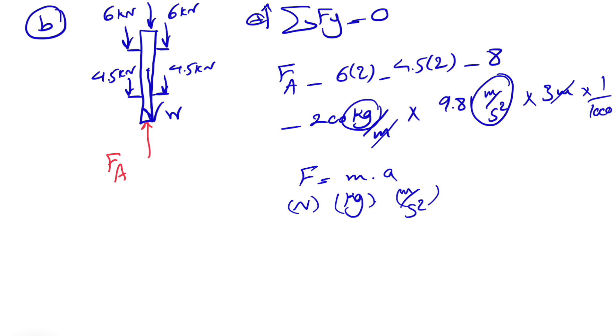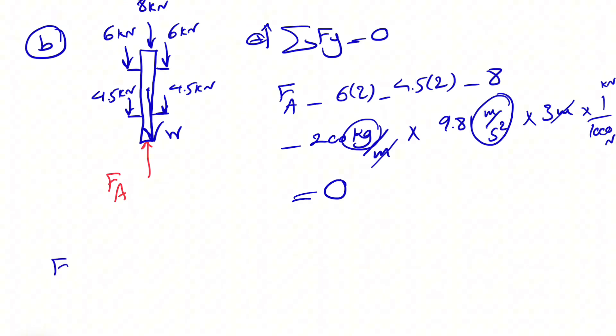That's going to give us Newtons, but all the other units are in kilonewtons. So we need to divide by a thousand to get it in kilonewtons. We know one kilonewton equals 1000. This will equal zero, which comes from our equilibrium equation.